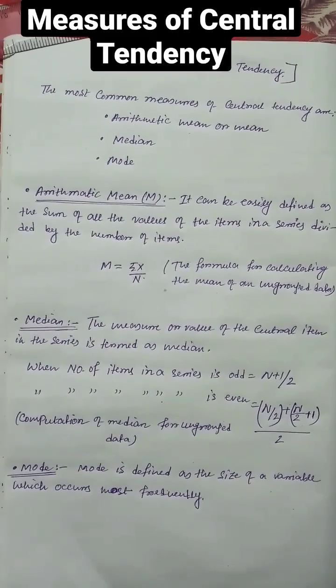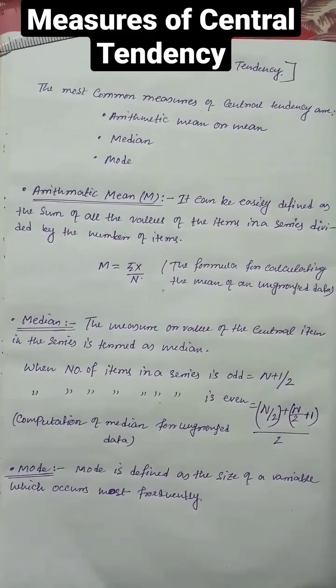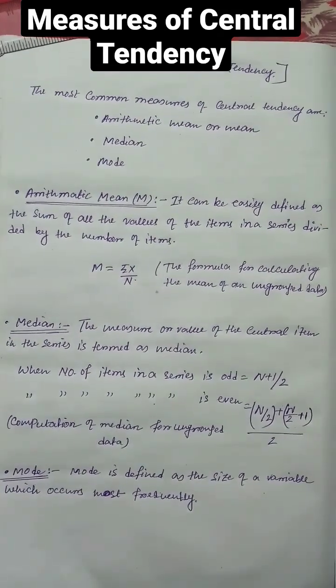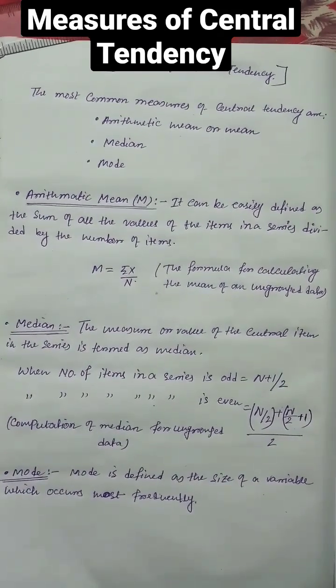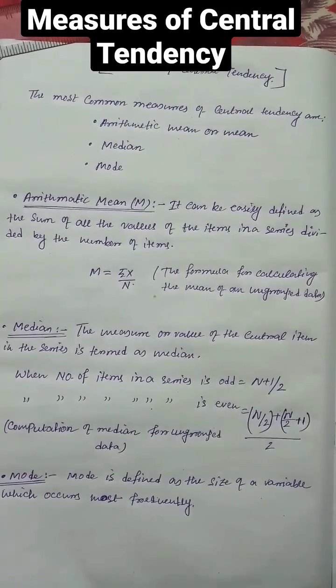Median is the measure or value of the central item in the series. When the number of items in a series is odd, the formula is (N+1)/2. When the series is even, the formula is ((N/2) + (N/2+1))/2.